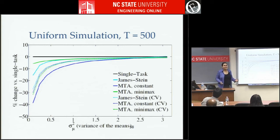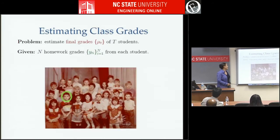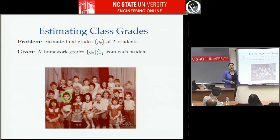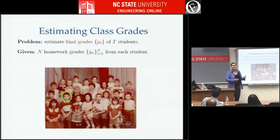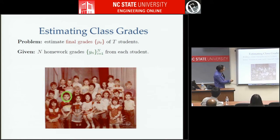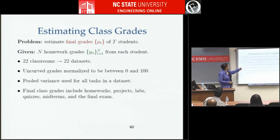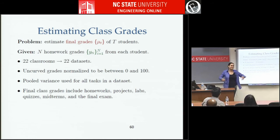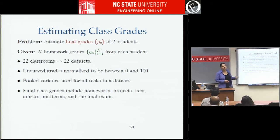Now let's look at real data — first a class grades example. We took homework grades and wanted to estimate final grades, where the model is that the final grade is the expected grade and homeworks are IID samples from that distribution. We got 22 different classrooms from different professors, with both homework and final grades. For each dataset, the students are the multiple tasks — if we have 50 students, we're regularizing those 50 students together. We use pooled variance to estimate the variances in all cases.